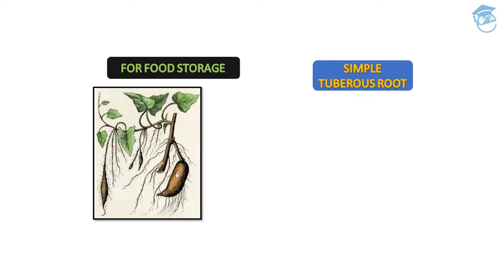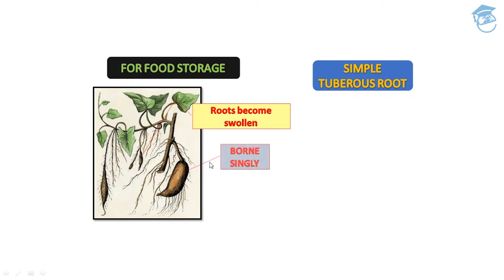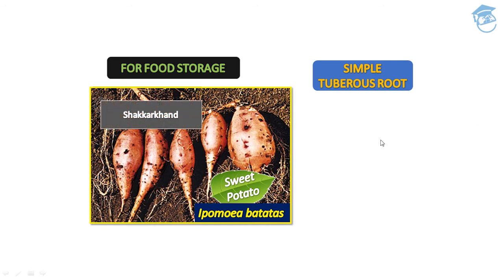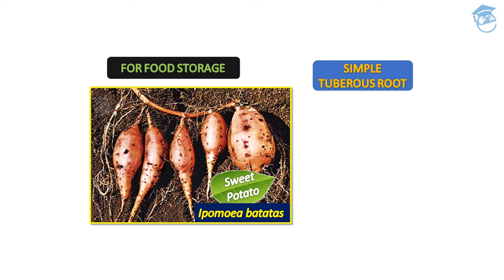Now let's see modifications of fibrous root. First is for food storage — this is the simple tuberous root, where the root becomes swollen and occurs singly. The root arises from the node of a stem. This is seen in sweet potato, whose botanical name is Ipomoea batatas, also known as shakarkand or ratalu in day-to-day language.